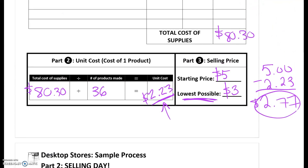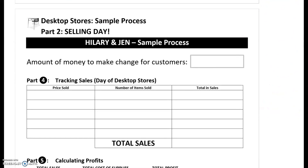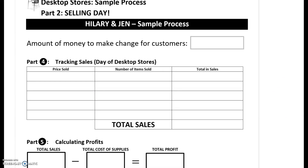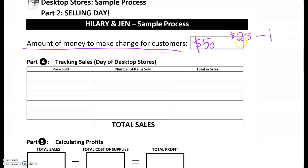That's everything you need leading up to the actual selling day. On the day of selling, you need to keep track of how much you sell and at what price, because that's going to help you with your total sales. People are going to come in with fives, tens, or maybe even twenties, and you need to be able to give them change. Hillary and Jen are planning to have about $50 worth of change — something like $25 in $1 bills and $25 in $5 bills. When they count their money at the end of the day, that $50 will still be in there, so they have to remember to take it out.